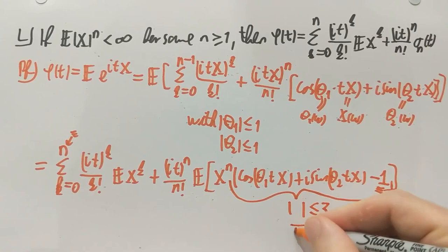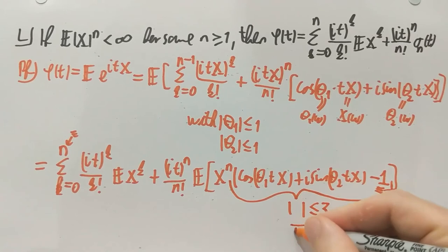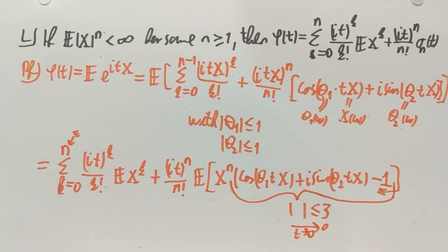So now I can apply a dominated convergence theorem. Which tells me that even outside the expectation since x to the n is finite and doesn't depend on t. Even outside the expectation this whole thing will go to zero. Everything I have inside the expectation. Let me do just one more step here.